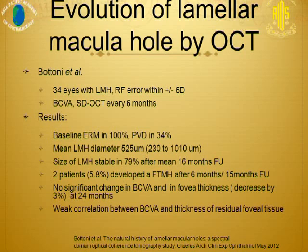The second evolution study used spectral domain OCT and also included highly myopic eyes. Thirty-four eyes with lamellar hole were studied every 6 months. Results showed that all patients had an epiretinal membrane. However, the mean diameter of the lamellar hole did not show a statistically significant change in this study. Visual acuity remained stable in all patients, and only a weak correlation was found between best corrected visual acuity and the thickness of the residual foveal tissue.